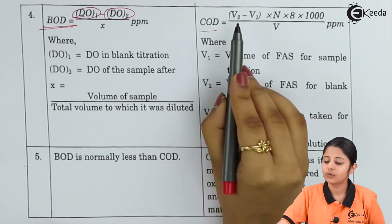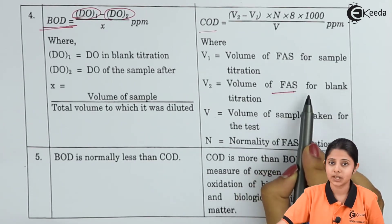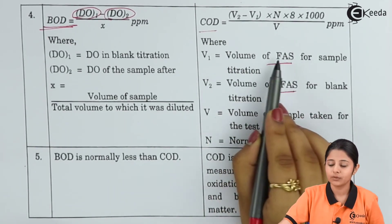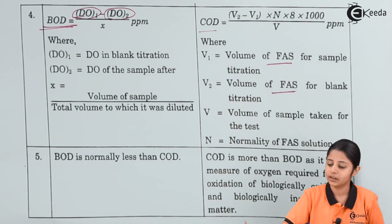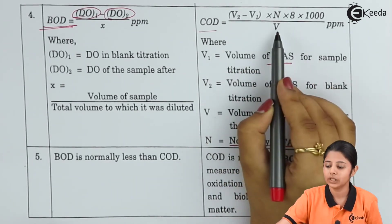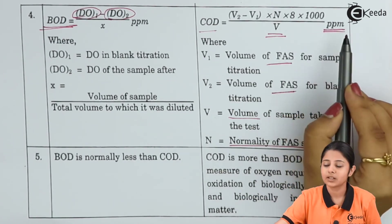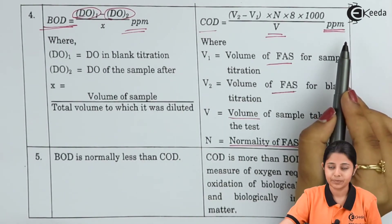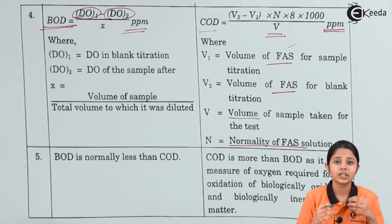For the calculation of COD, we use: (V2 - V1) × N × 8 × 1000 / V, expressed in PPM. V2 is the volume of FAS (Ferrous Aluminum Sulfate) solution for blank titration. V1 is the volume of FAS for sample titration. N stands for normality of the FAS solution. V is the total volume of the sample taken for the test. When you get this value, it is the actual value of COD — how much oxygen is in demand because of the chemicals present in the water.